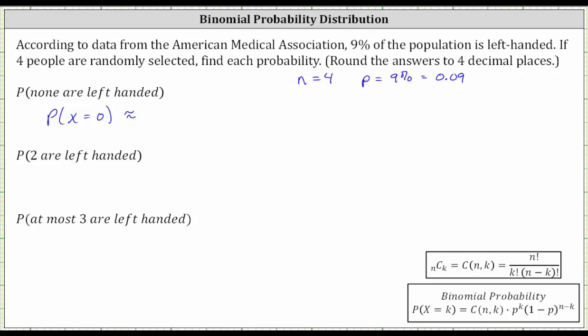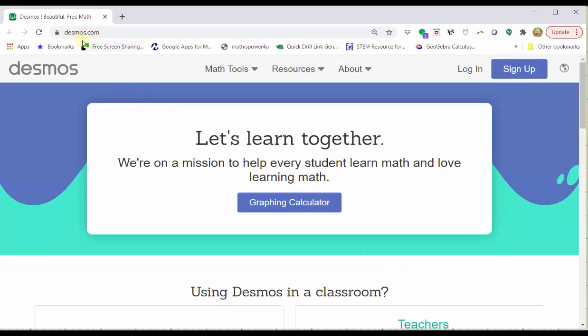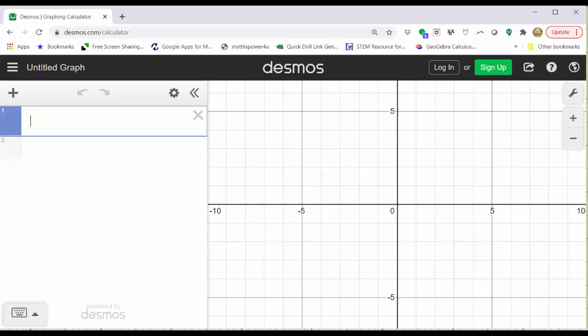Let's go to desmos.com and graph the binomial probability distribution. Go to desmos.com, click graphing calculator. Next, click show keypad in the lower left-hand corner.